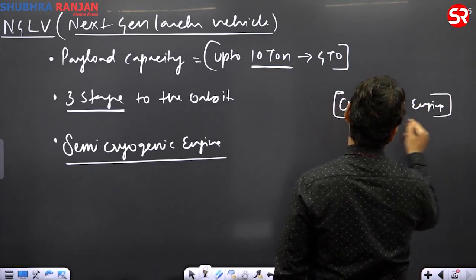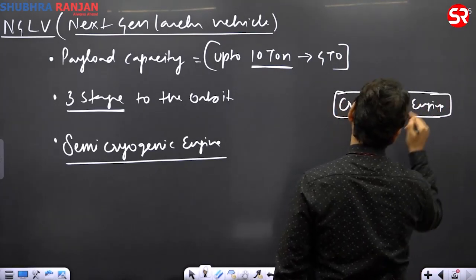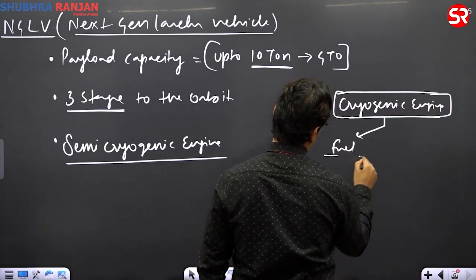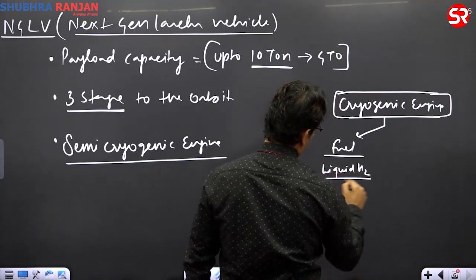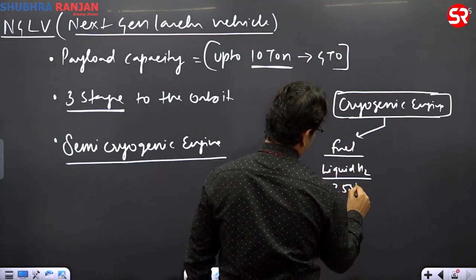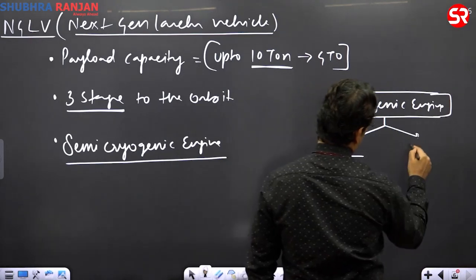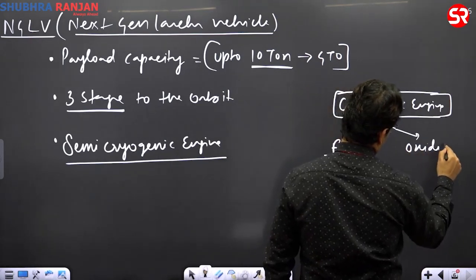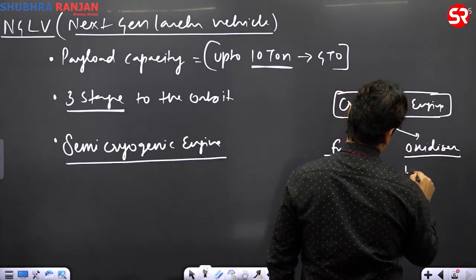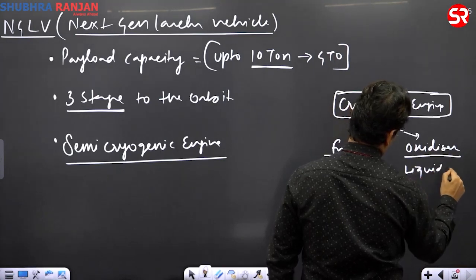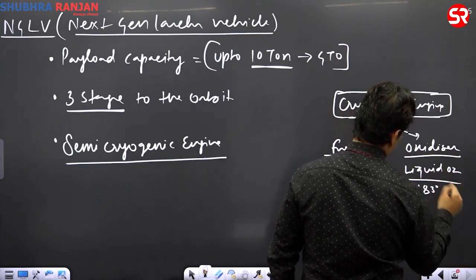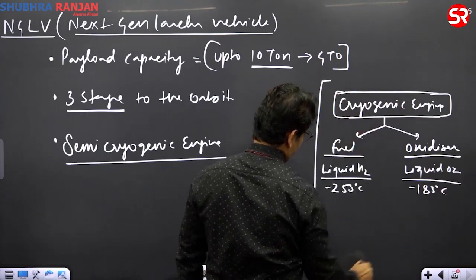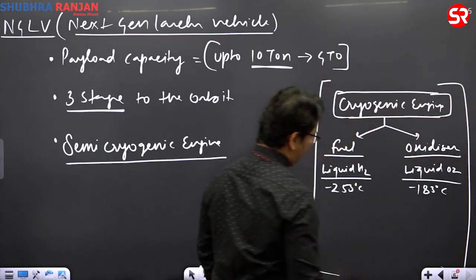And this cryogenic engine uses fuel in the form of liquid hydrogen at minus 253 degrees celsius, and oxidizer in the form of liquid oxygen at minus 183 degrees.